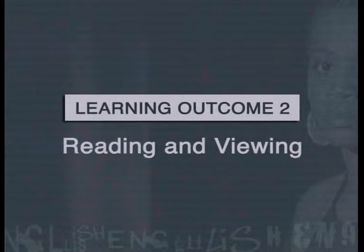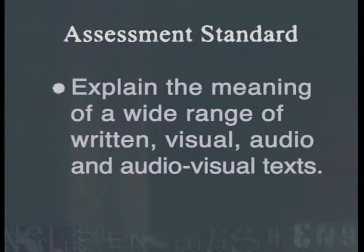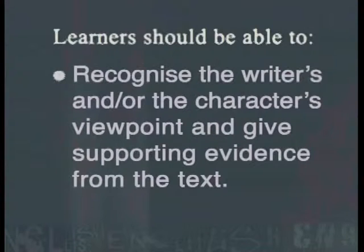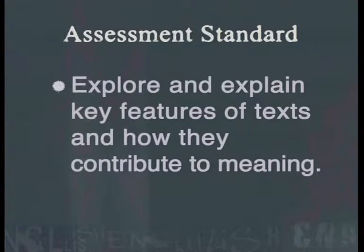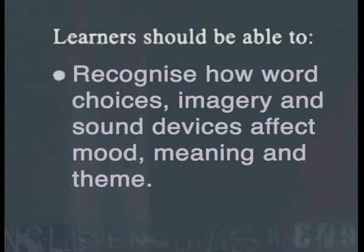The following lesson is linked to Learning Outcome 2, Reading and Viewing. It addresses the assessment standard that requires learners to explain the meaning of a wide range of written, visual, audio and audiovisual texts. Learners should be able to recognise the writer's and/or the character's viewpoint and give supporting evidence from the texts. This lesson also addresses the assessment standard which requires learners to explore and explain key features of texts and how they contribute to meaning. Learners should be able to recognise how word choices, imagery and sound devices affect mood, meaning and theme.